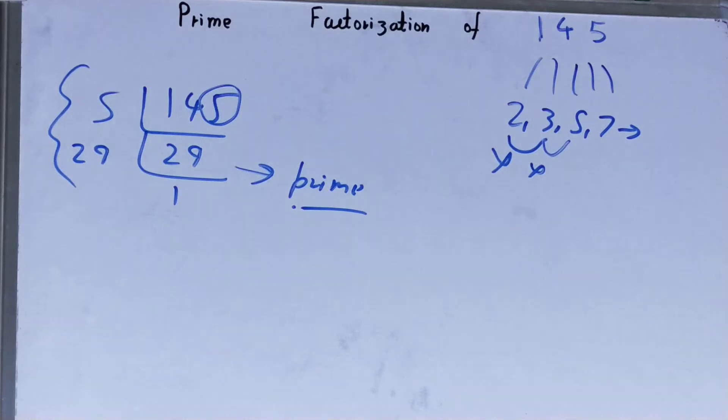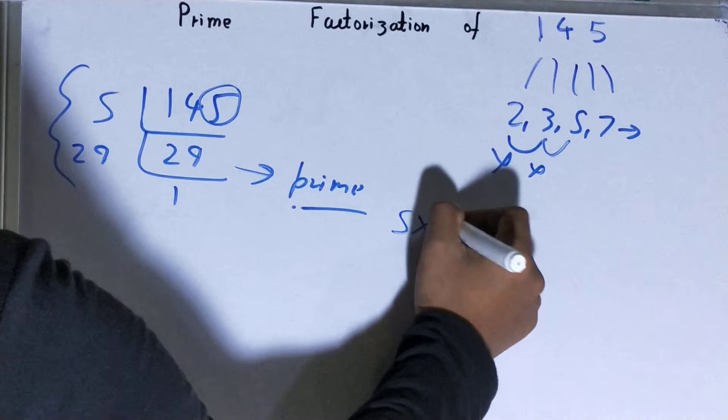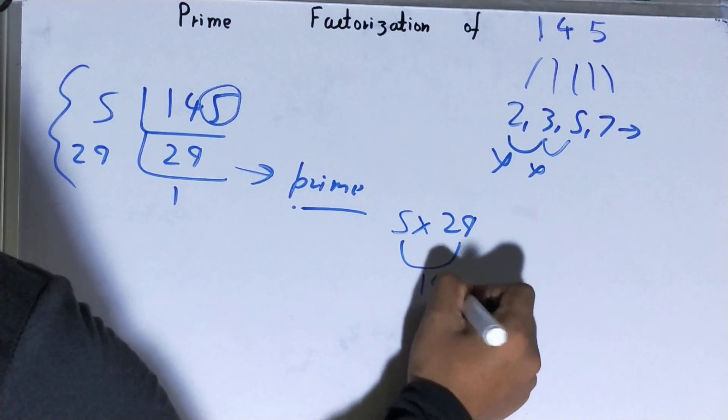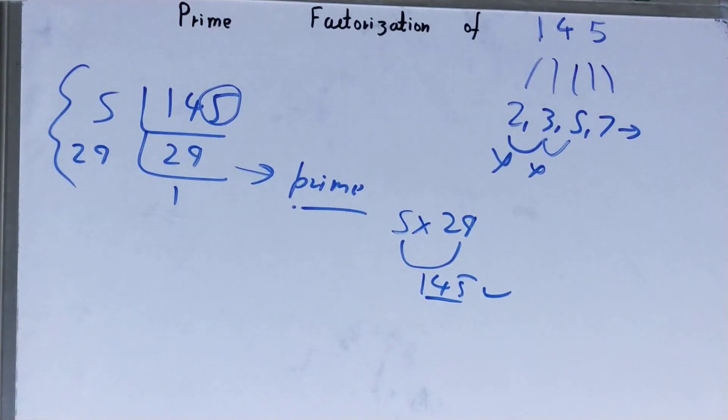Whatever you have on the left-hand side will be your set of prime factors for the number 145, that is 5 × 29. If you want to check whether it is right or not, you can actually multiply them. If you're getting the number back again, your calculation is right. If you're not getting it, then something is wrong.